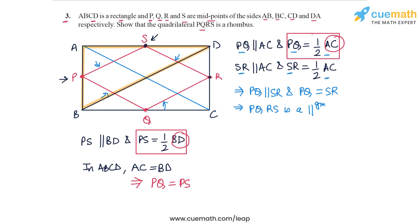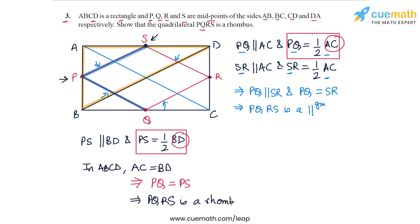So PQ must be equal to PS. What we now have is a parallelogram PQRS in which the adjacent sides PQ and PS are shown to be equal, and this means that PQRS must be a rhombus. So we can conclude that PQRS is a rhombus and this completes our proof.